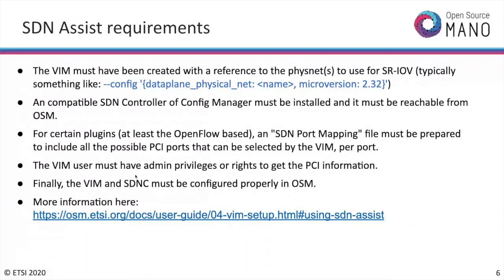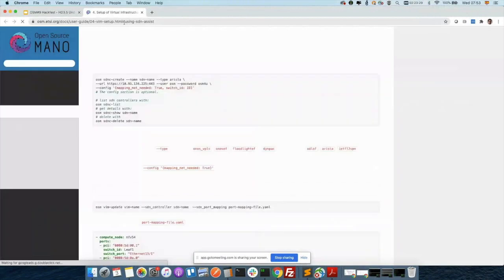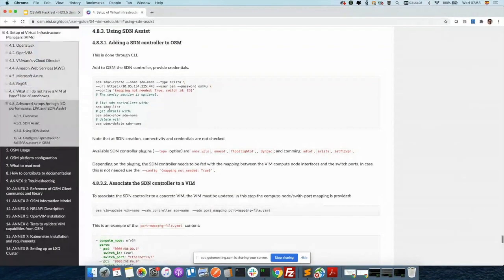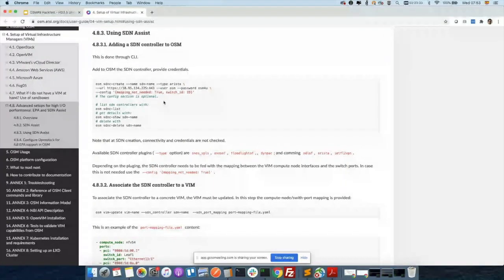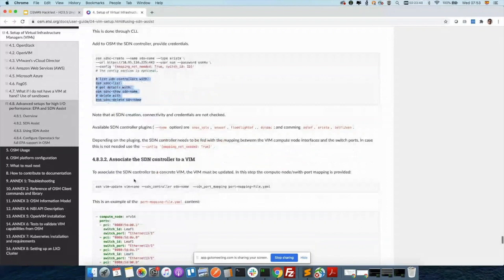Finally, the VIM and SDN controller must be configured properly in OSM. The same way you add a VIM, you will need to add an SDN controller, and you need to tell the VIM: here is this SDN controller, use it in case you need to instantiate a VIM which needs interconnection. There is more information in the OSM user guide on how to create and interact with SDN controllers and how to associate an SDN controller to a VIM.